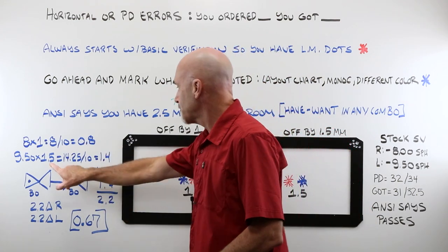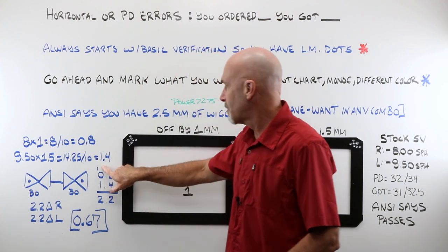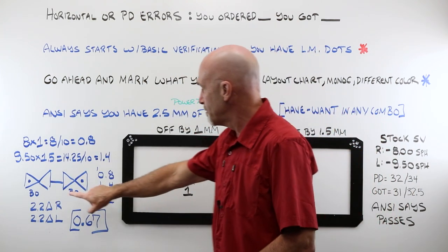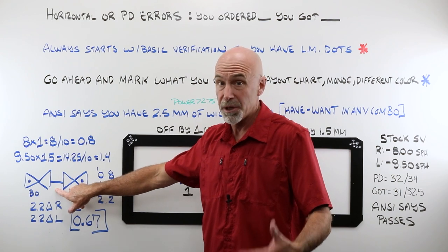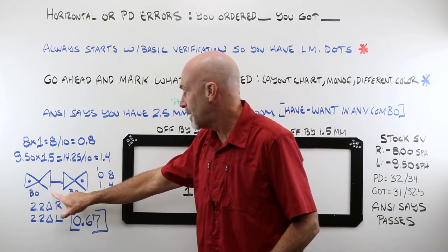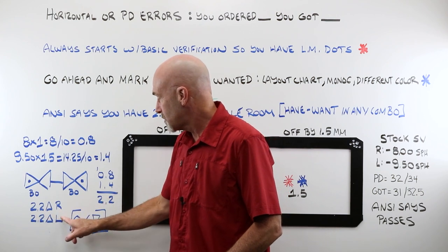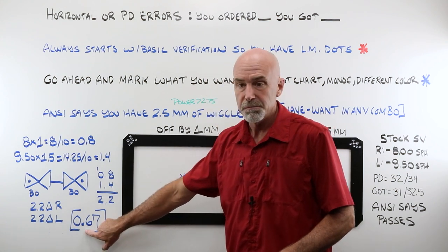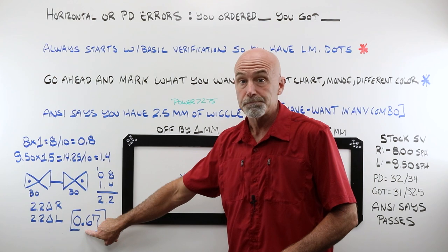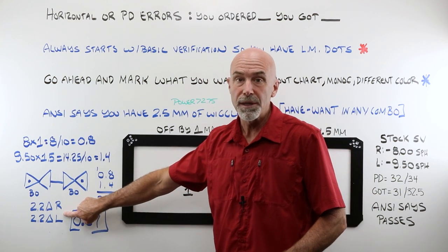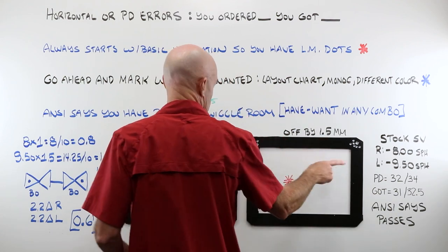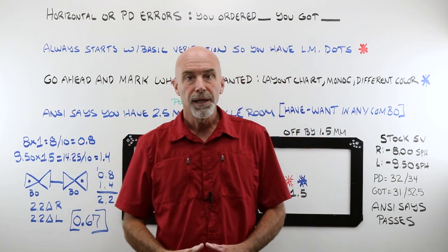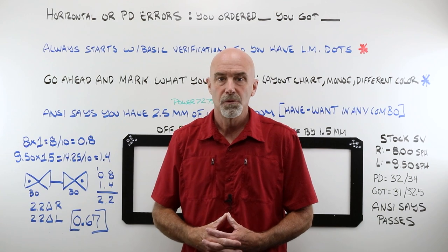If I've got eight diopters and I'm off one millimeter, I end up with an error of 0.8. If I've got nine and a half diopters and I'm off one and a half millimeters, I end up with an error of 1.4. Base out, base out, compounds. We're just following Prentice's formula and applying the rules of how you write out compounded prism error. I've got 2.2 in the right, 2.2 in the left. What does ANSI say as a standard? 0.67. Do you think your customer is going to be happy wearing that? Because you're off only one and a half and one. That's a total of two and a half. Think that's a good idea? Probably not. Right? That is why this all comes down to you.